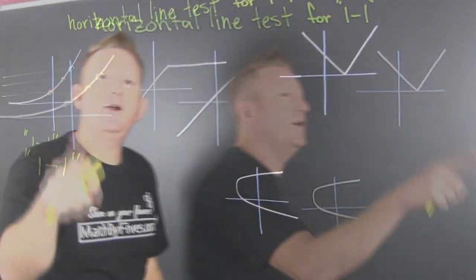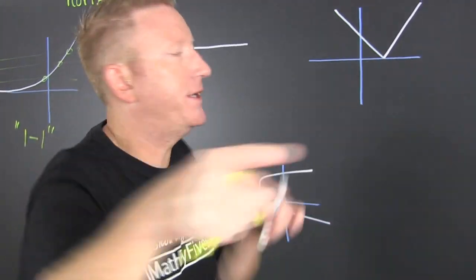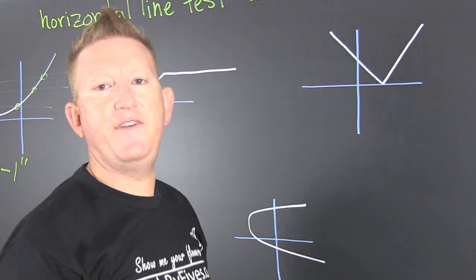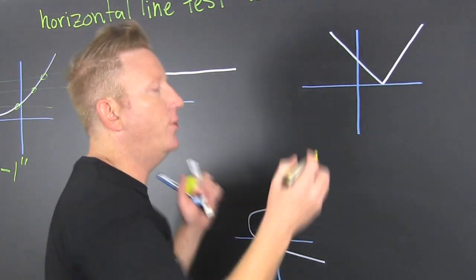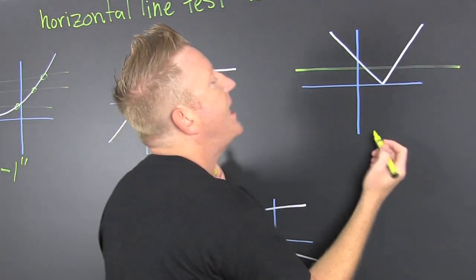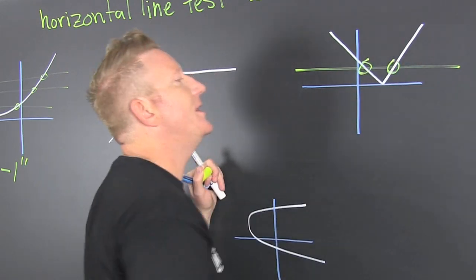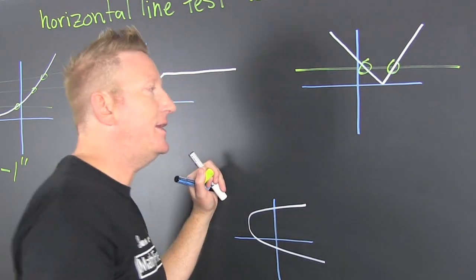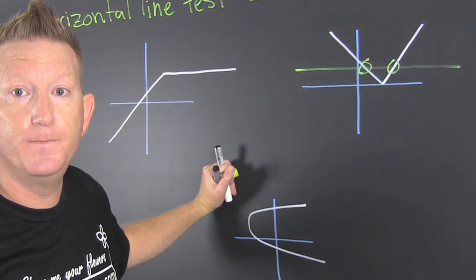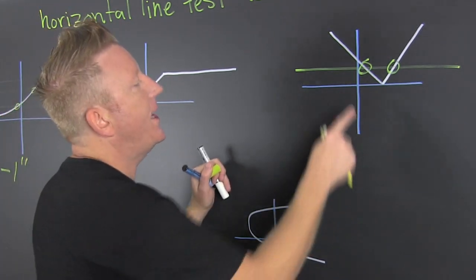Let's go up and look over here. Something like the absolute value — I can draw a horizontal line that touches at more than one spot. So is that one-to-one?